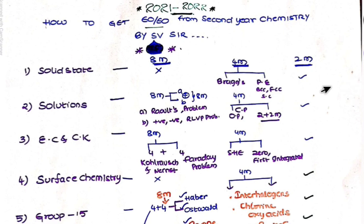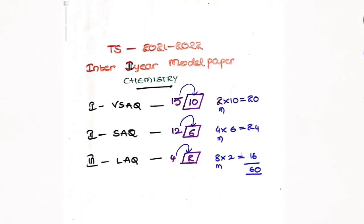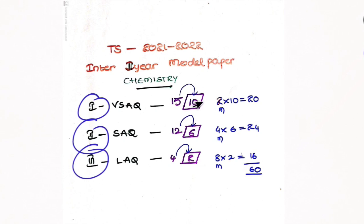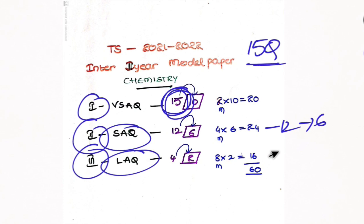So, in second year intermediate, total there are 3 bits - that is 15 marks, or rather 15 questions. There are more than 5 extra questions. For short answers and long answers, we have differences, but here 10 is 10 - no choice.